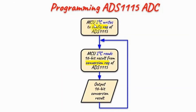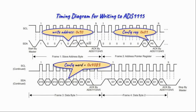To program the ADS1115, the microcontroller first uses the I2C bus to write into the config register to initialize the ADC. The microcontroller begins with the start pulse, then sends the write address. After acknowledgement from the device, it sends the address pointer register byte to access the configuration register, then sends the high byte of the configuration word followed by the low byte, and ends the communication with the stop pulse.